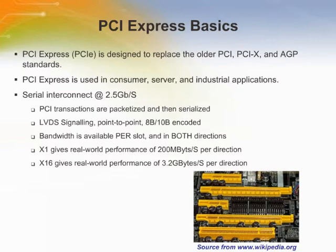PCI Express devices communicate via a logical connection called a link — a point-to-point communication channel between two PCI Express ports. At the physical level, a link is composed of one or more lanes. The lane is a full-duplex byte stream transporting packets containing the data in 8-bit byte format. Lane counts are written with an X prefix, and X16 is the largest size in common use.